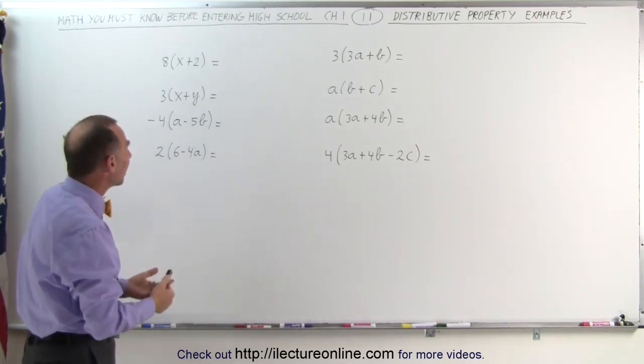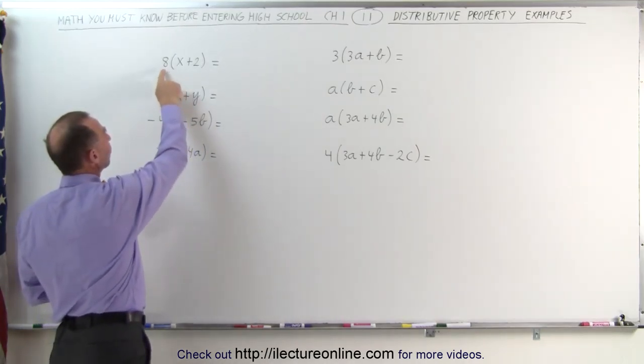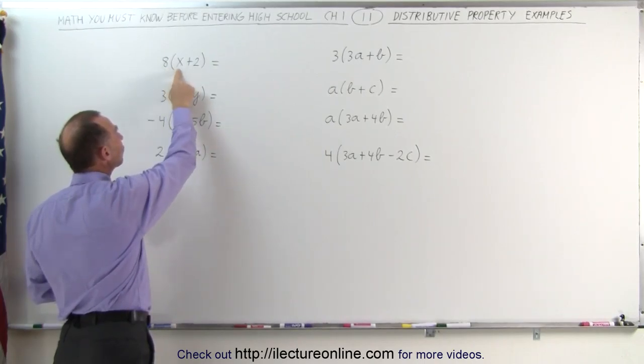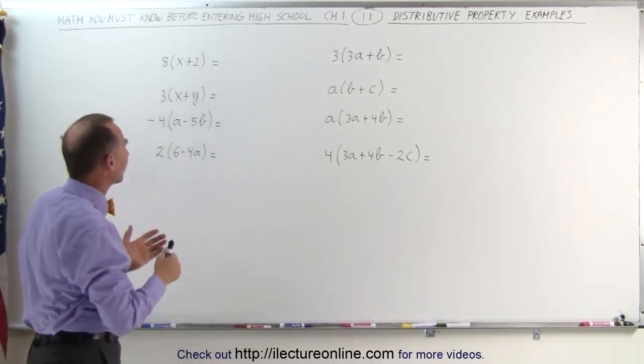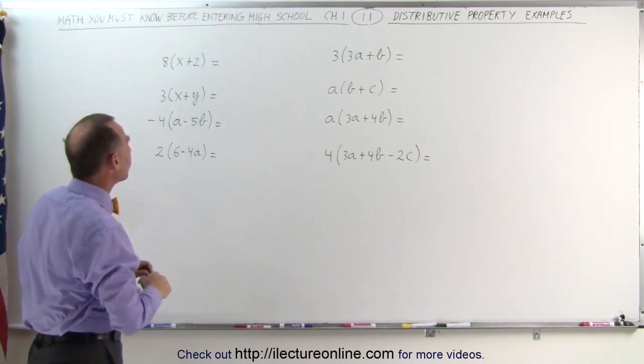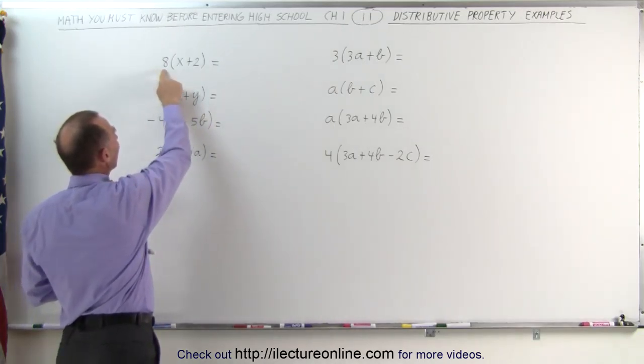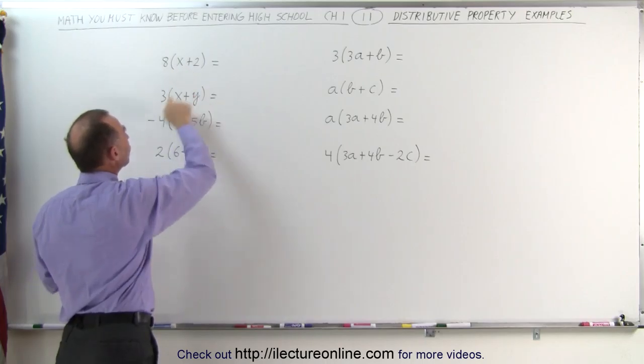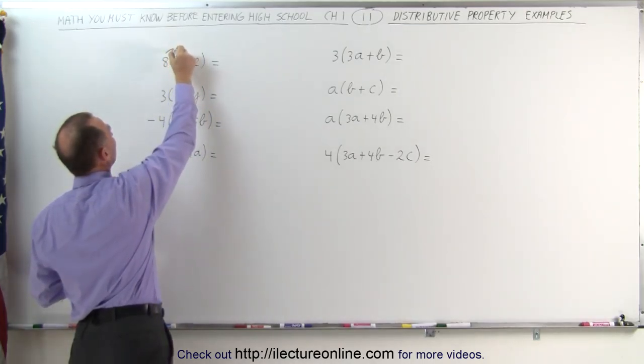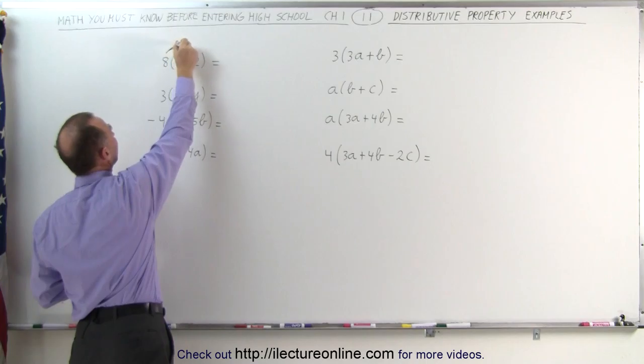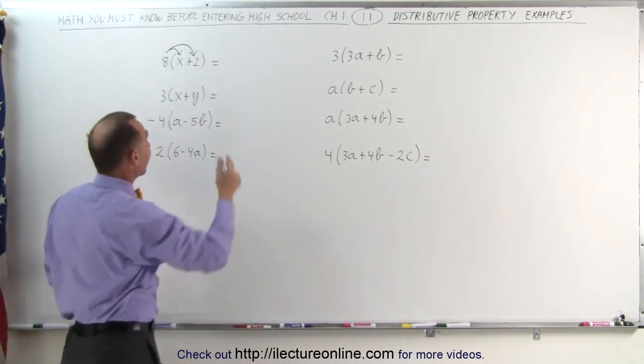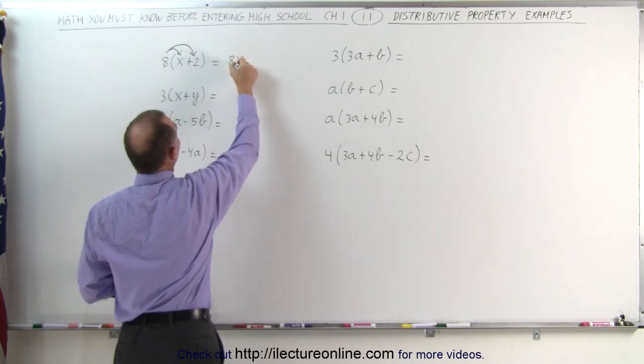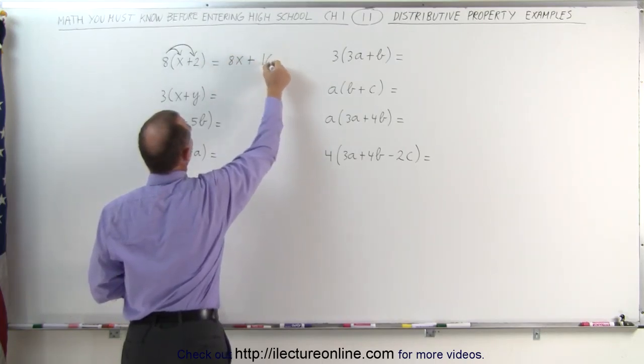Well, the distributive property tells us that we must multiply this number eight times each of the terms inside that parentheses. Each of the terms of the binomial, which means we multiply eight times x and eight times two. Sometimes it helps to draw little arrows like this, so we indicate that we're going to multiply eight times x and eight times two. Eight times x is eight x, and eight times two is equal to 16.